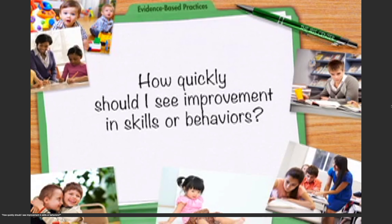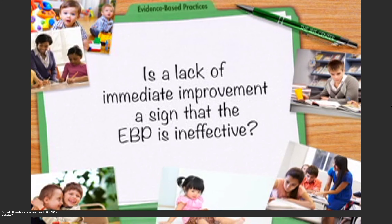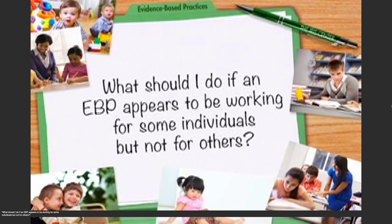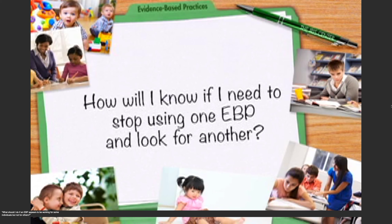How quickly should I see improvement in skills or behaviors? Is a lack of immediate improvement a sign that the EBP is ineffective? What should I do if an EBP appears to be working for some individuals but not for others? How will I know if I need to stop using one EBP and look for another?